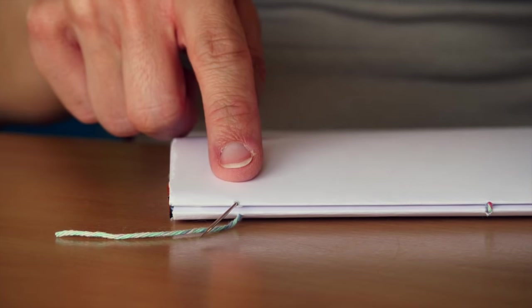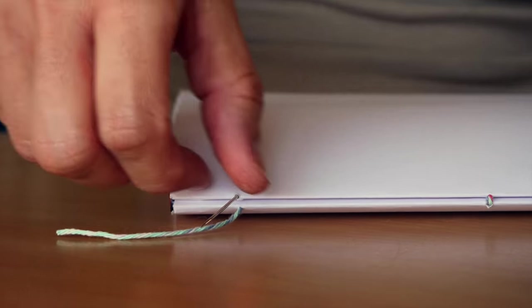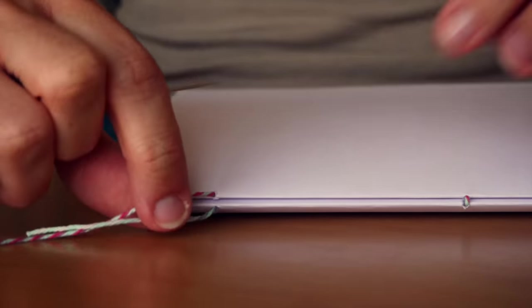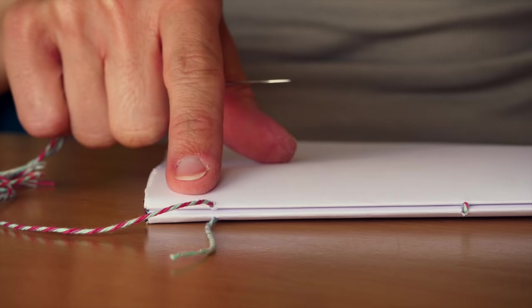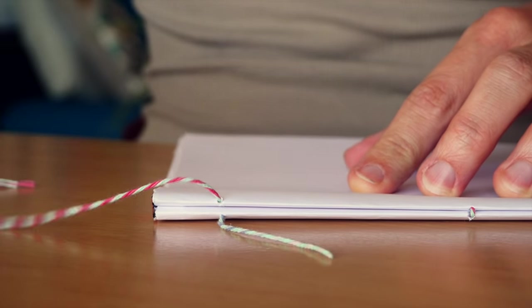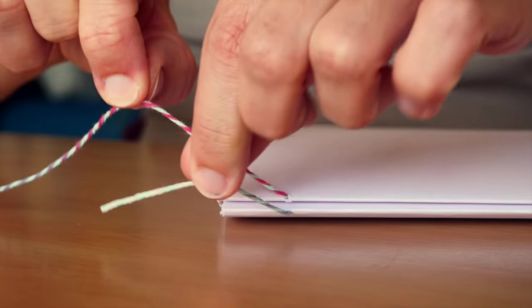I'm going to start with the two first signatures exactly the same way we did earlier in the previous video. At the end of this step of binding the two first signatures, you just pull your needle out of the last hole. If you did it the same way as me, without any knots at the beginning, you have the tail and the thread on the same side.